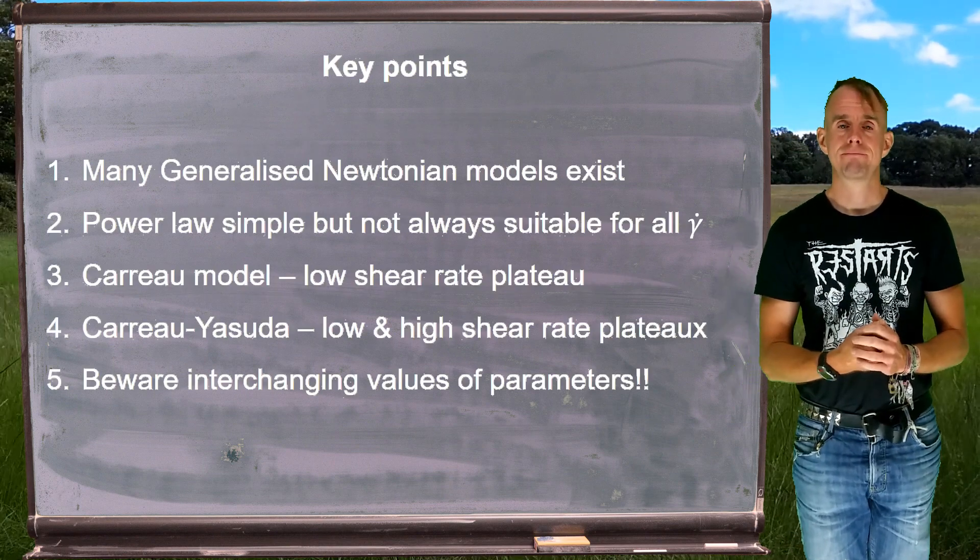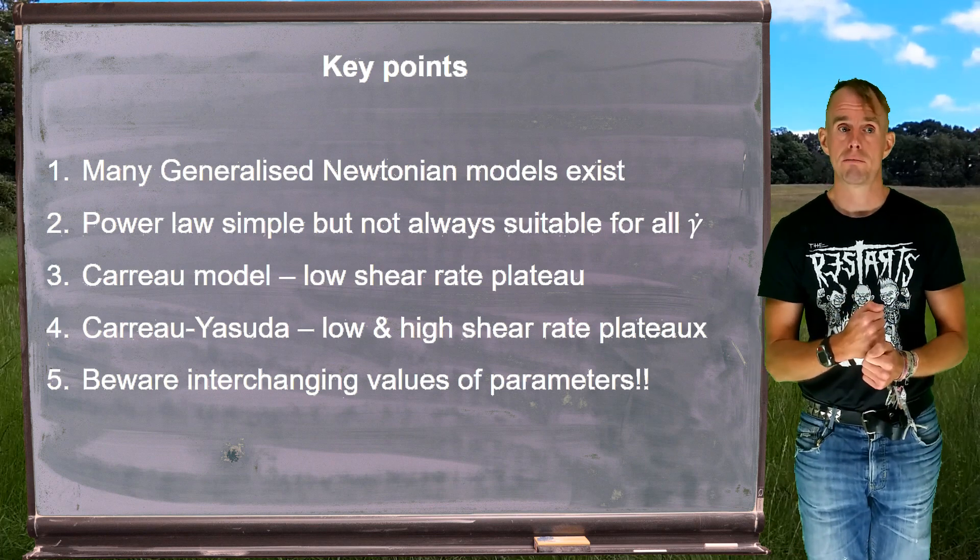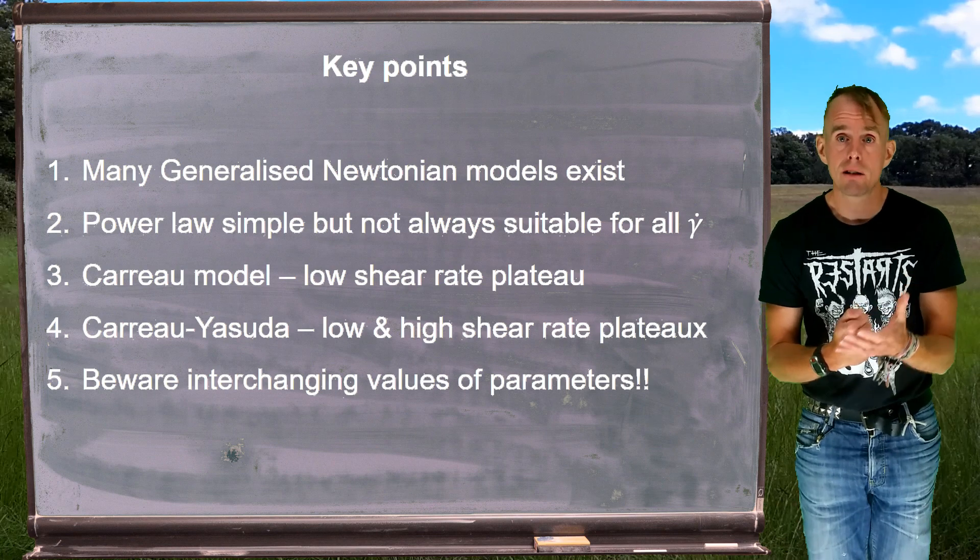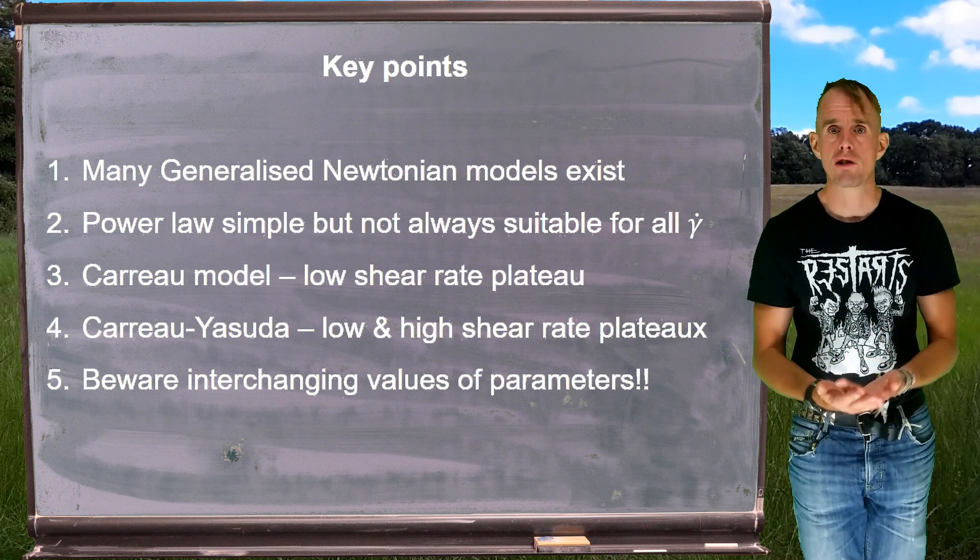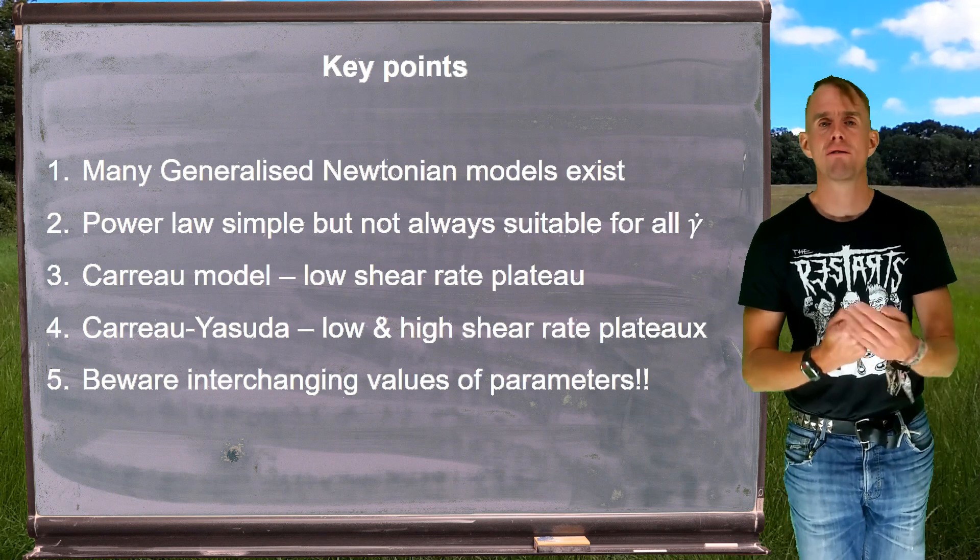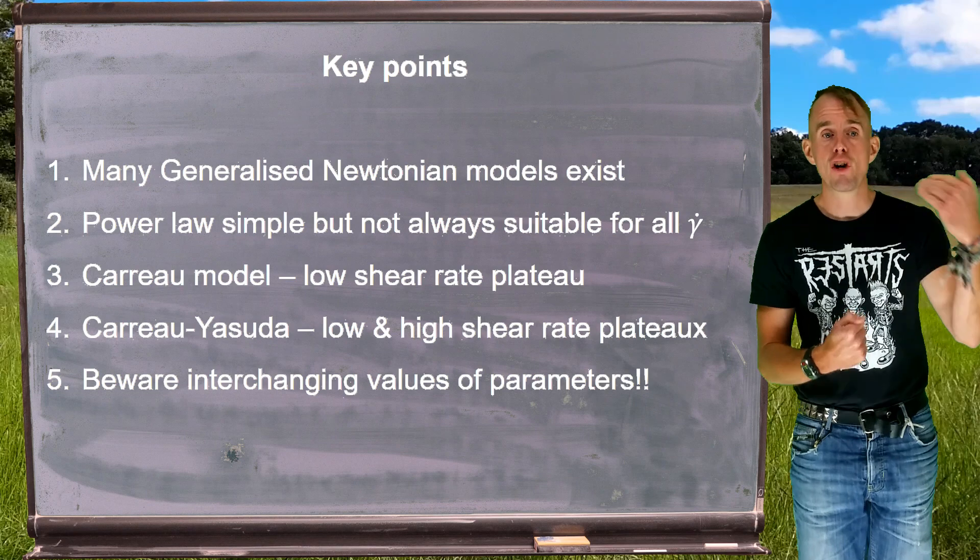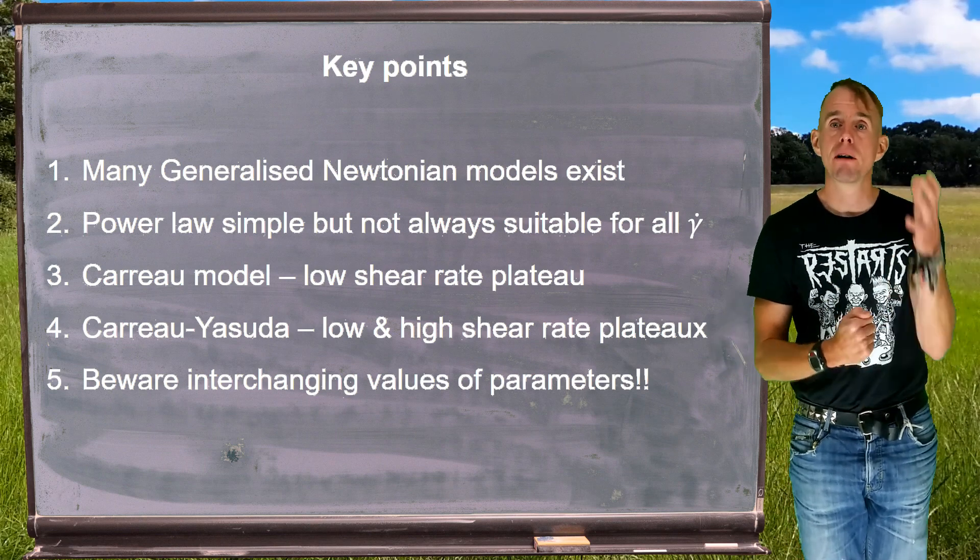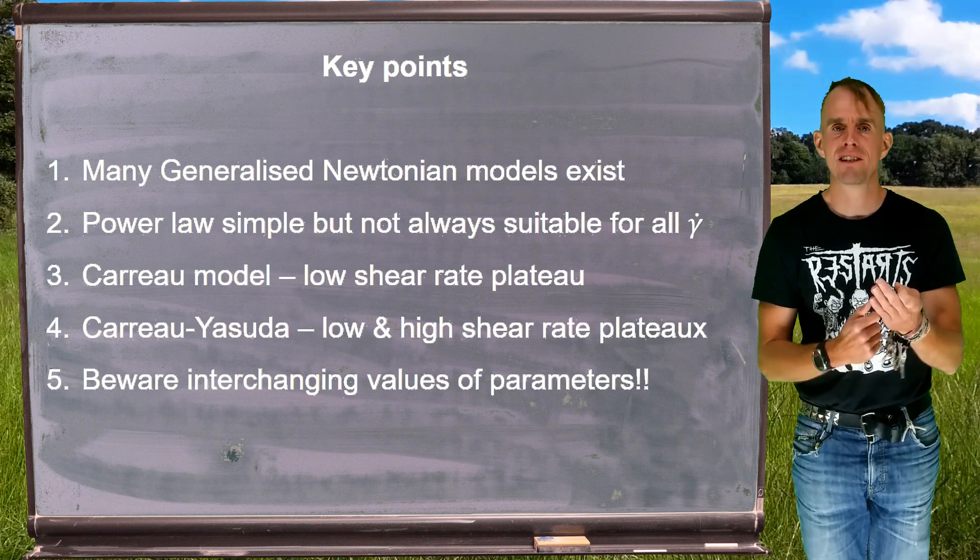Some key points to recap on. The bottom line here is that many different generalized Newtonian fluid models exist. We've only looked at three, but in my view, they're the three most important. We've got the power law, the Carreau and the Carreau-Yasuda models. And these models are ones that you will find very frequently in computational work. We've reminded ourselves that the power law fluid is indeed simple, but is not necessarily appropriate for all situations that you might encounter. The Carreau model has three adjustable parameters and is capable of capturing low shear rate Newtonian plateau. The Carreau-Yasuda model is a development of the Carreau model with five adjustable parameters, and it has low and high shear rate Newtonian plateaus, and you can manipulate the transition away from and to those plateaus by the various powers that we have. And the final note, beware of interchanging absolute values of parameters between different constitutive equations.